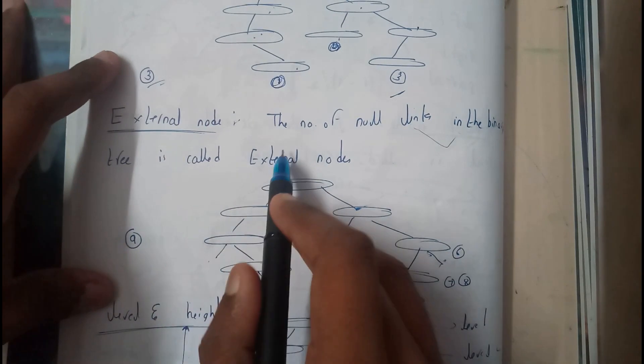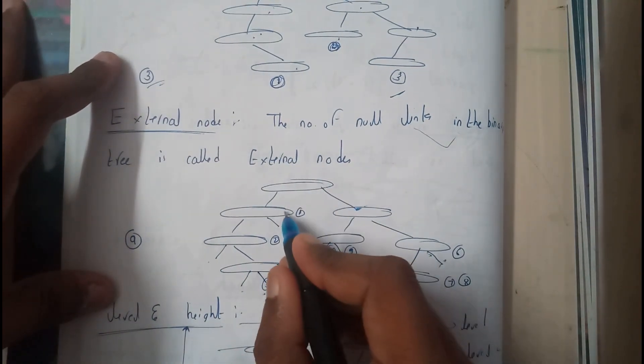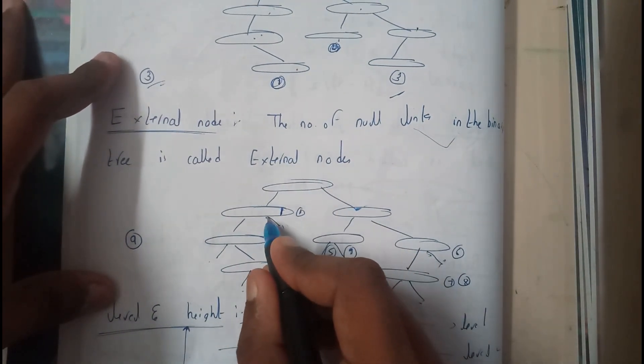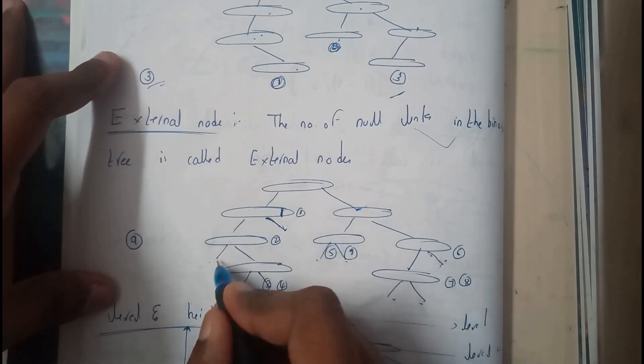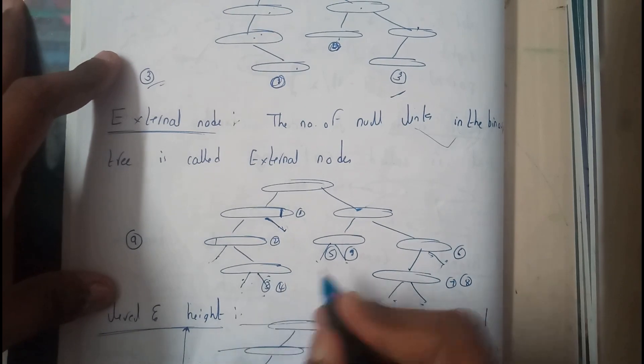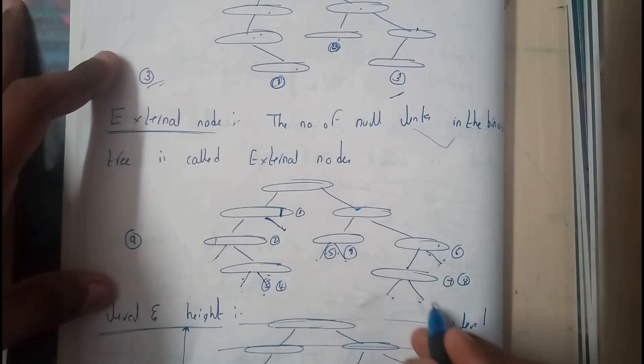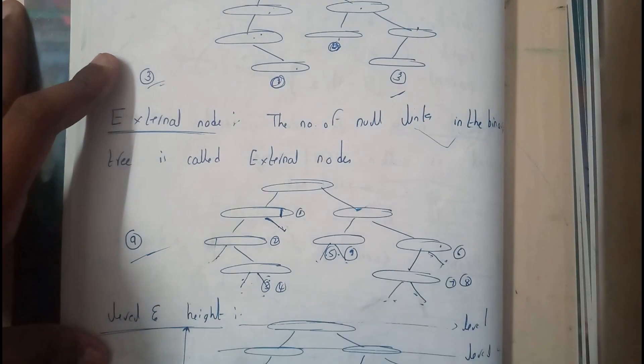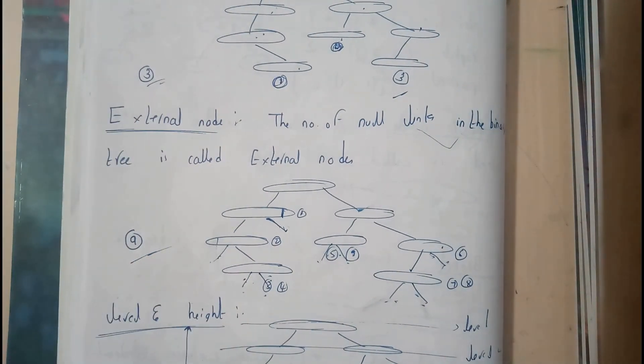So similarly, what is an external node? So basically, an external node is nothing but the number of null links. Here we are not having any children, so here we will be having one null link. No children, one null link. We are not having any children, so two null links, two null links, one null link, two null links. So in this diagram we are having nine null links. So now I hope everyone got a small idea on external node.